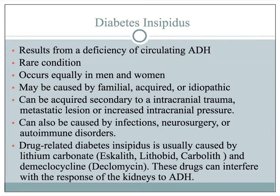Diabetes insipidus is a condition where there is not enough antidiuretic hormone, and so the patient loses excessive amounts of fluid. Lots of different causes can make this happen, and it is rare. Sometimes it's just a familial or idiopathic cause, which means we really don't know why a patient has it. It can be secondary to intracranial trauma, infections, or brain surgery, which can affect the pituitary gland due to swelling. Sometimes it can be just temporary due to trauma — once a patient is treated effectively for their trauma or neurosurgery, the problem may resolve. It can be long-term if the cause is idiopathic.